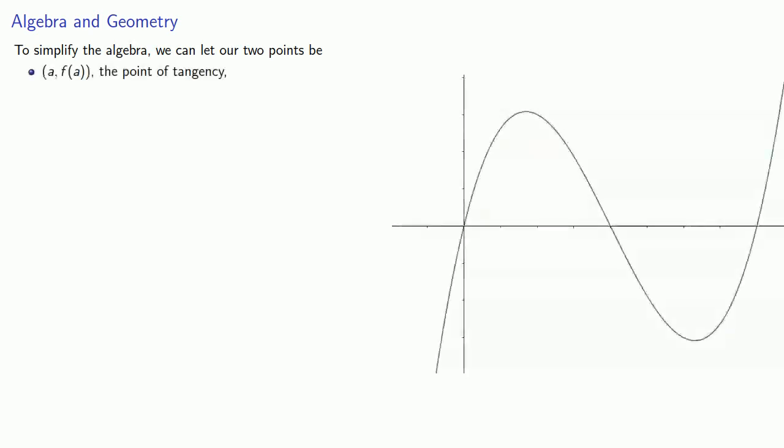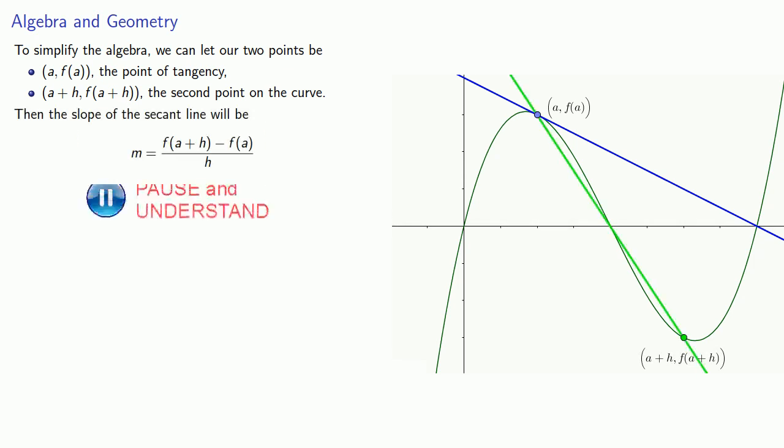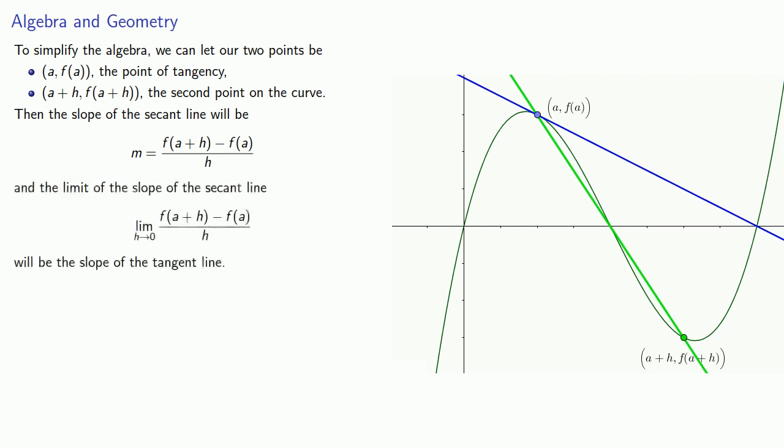To simplify the algebra, we can let our two points be (a, f(a)), the point of tangency, and a nearby point, which we can think about as being (a + h), and the corresponding y value, f(a + h). Then the slope of the secant line has a nice form, and the limit of the slope of the secant line, as h goes to 0, will be the slope of the tangent line.